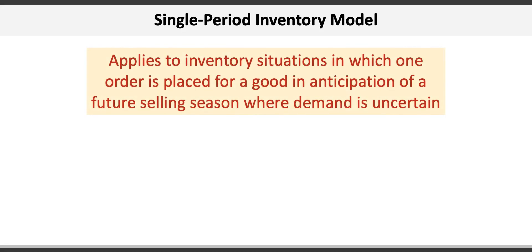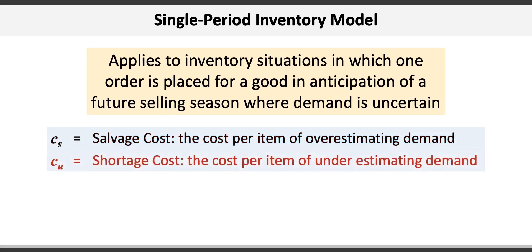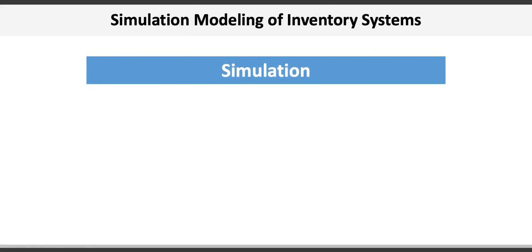The last inventory model is the single period inventory model. This applies to situations where one order is placed for a good in anticipation of a future selling season where demand is uncertain. At the end of the period, the product has either sold out or there's a surplus of unsold items with a salvage value. Single period models are used for seasonal or perishable items — such as Christmas trees. The two key costs are the salvage cost Cs (cost per unit of overestimating demand) and the shortage cost Cu (cost per unit of underestimating demand). The optimal quantity Q* satisfies: P(demand ≤ Q*) = Cu / (Cu + Cs).